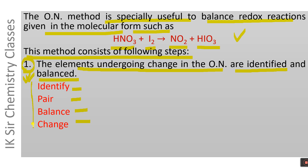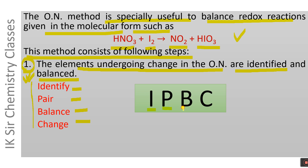In order to memorize these four sub-steps in the same sequence, we use memory by association, also called the memory by coding and decoding method. The first letters of these four sub-steps give us IPBC. When we decode: I means Identify, P means Pair, B means Balance, and C means Change. These four sub-steps are applied in this sequence.